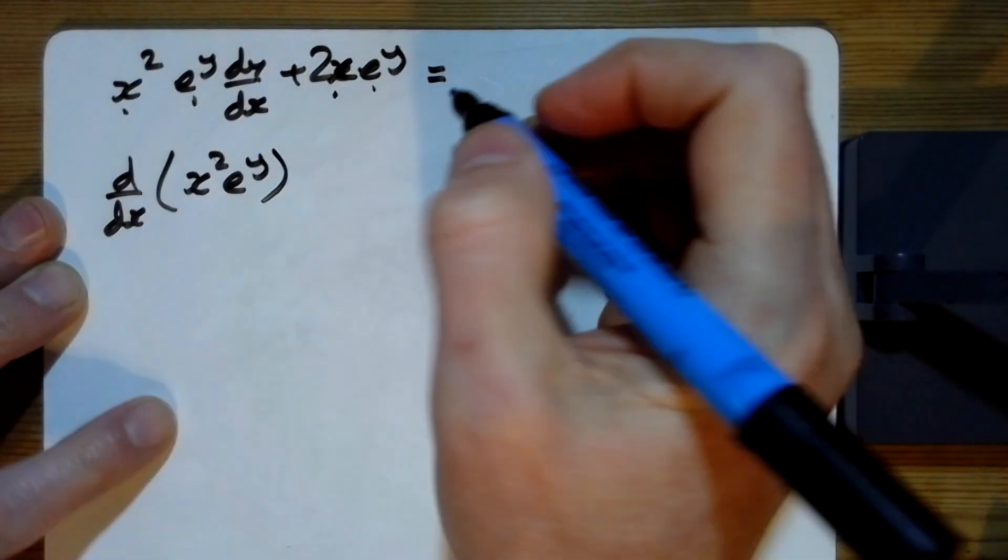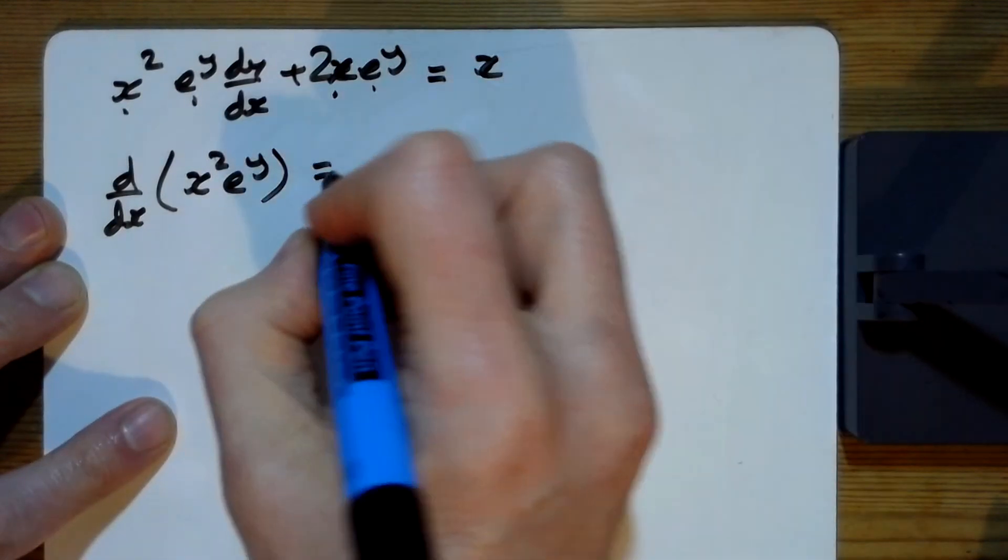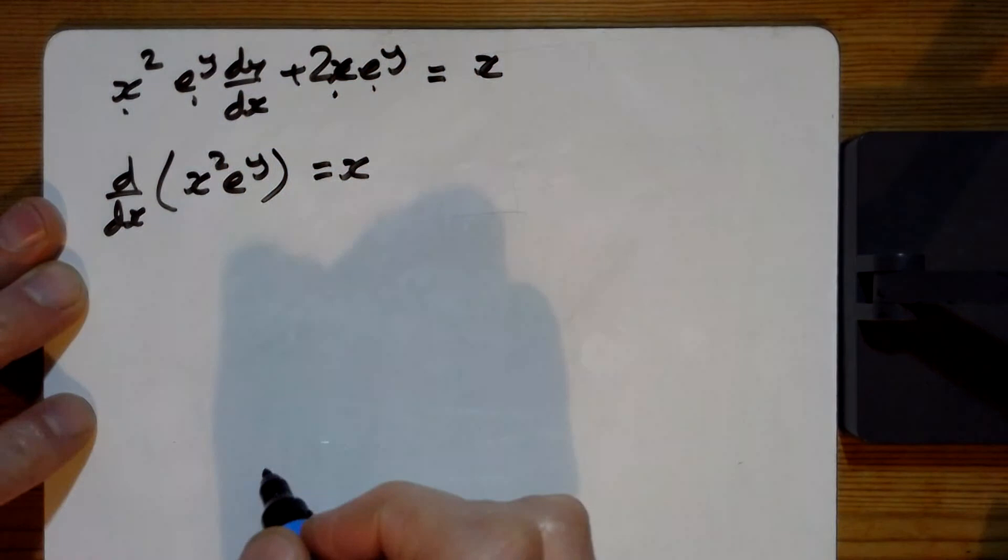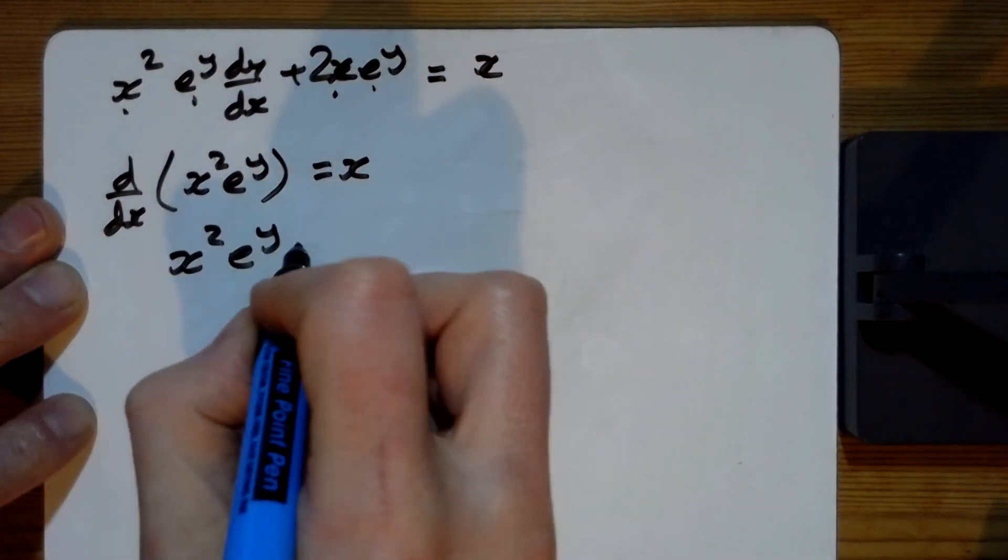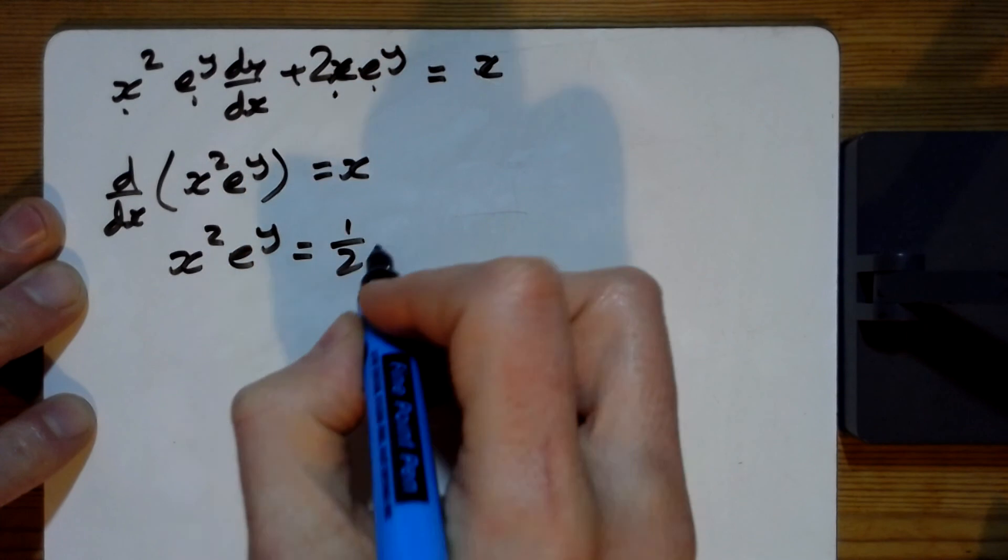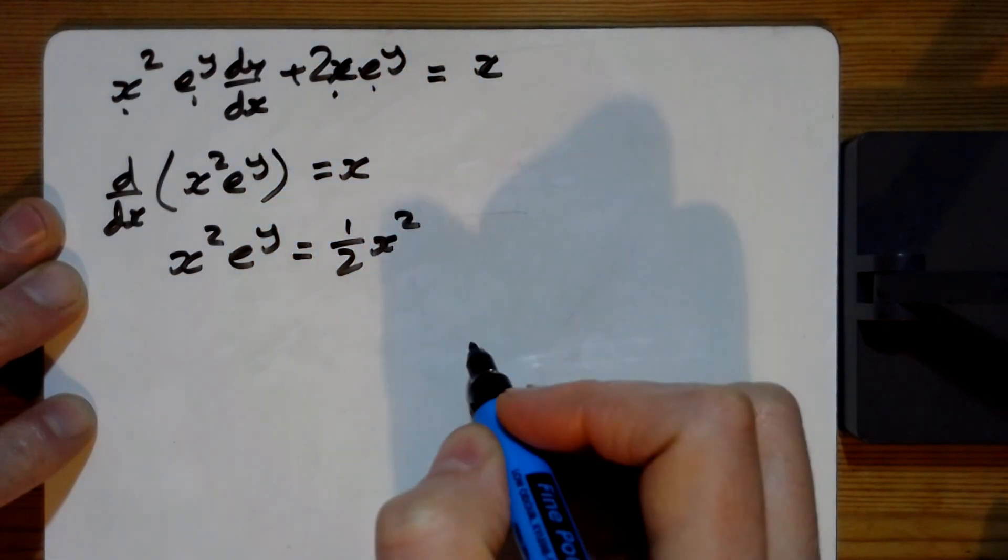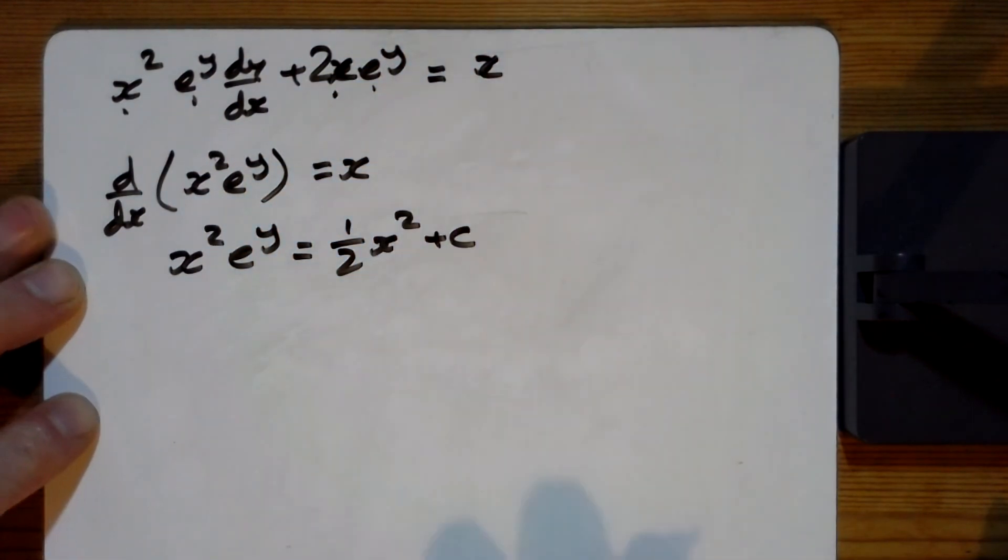And what does that equal on the right hand side? Just an x. So we've rewritten the question like that. Integrating both sides with respect to x gives us this, and I won't write out that bit there this time, x squared, half x squared plus c.